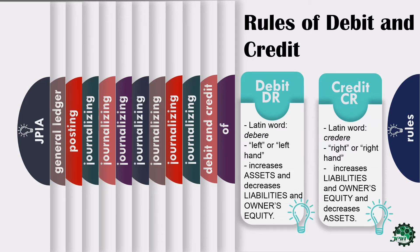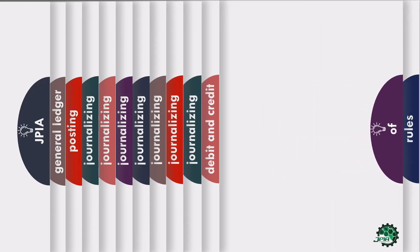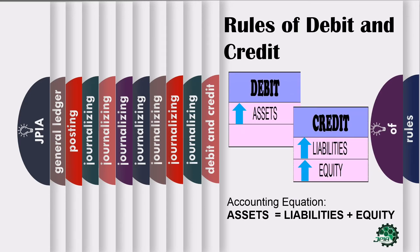For additional information, accounting is based on a double-entry system, which means that the dual effects of a business transaction are recorded. A debit side entry must have a corresponding credit side entry. The total debits for a transaction must always equal the total credits. Again, debit increases the asset and credit increases liabilities and owner's equity.